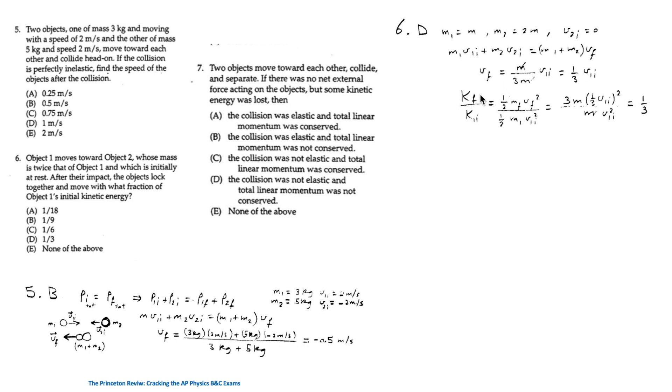The final kinetic energy of the combined object over the initial object's kinetic energy is equal to one third. We substitute for V final and M final is 3M, and so we get the answer is D.